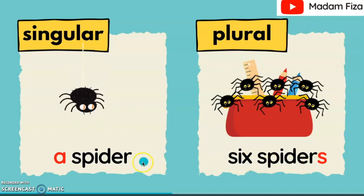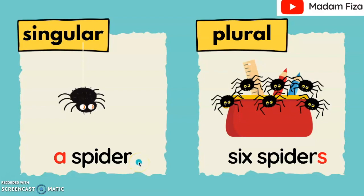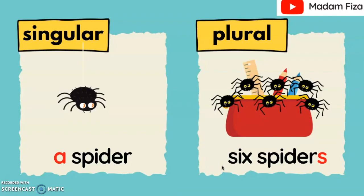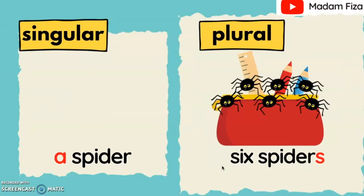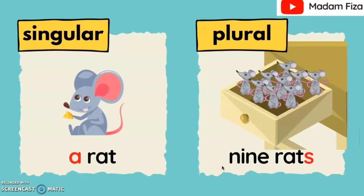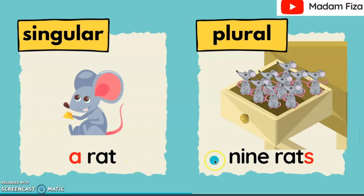Okay, let's read together. A spider. Six spiders. Okay, what about the rat? A rat is singular. Nine rats are plural.